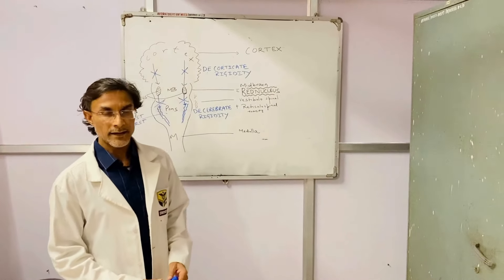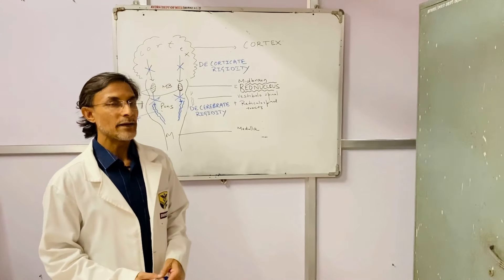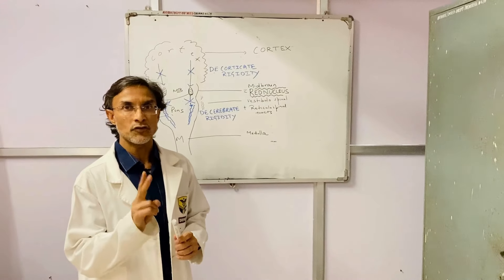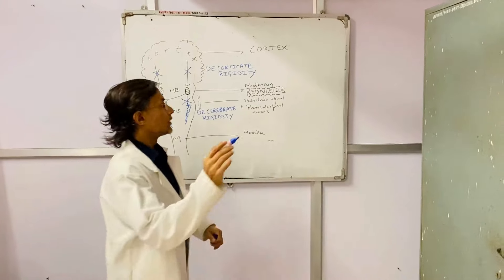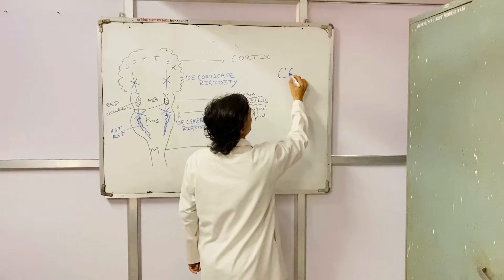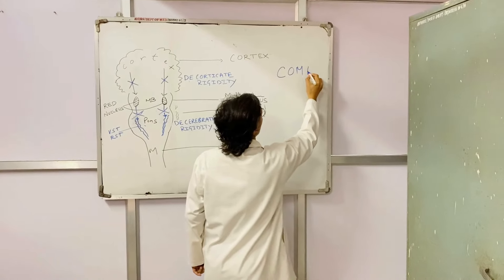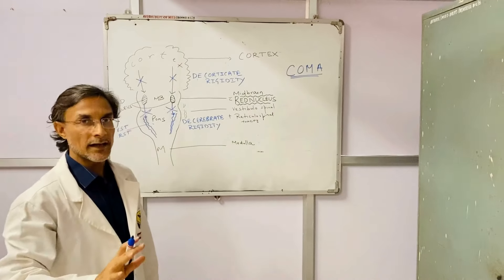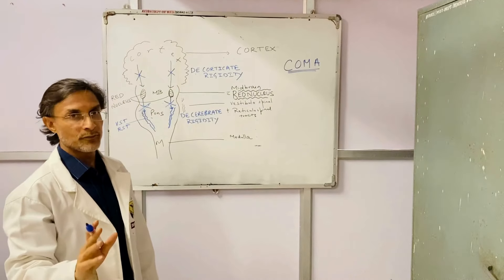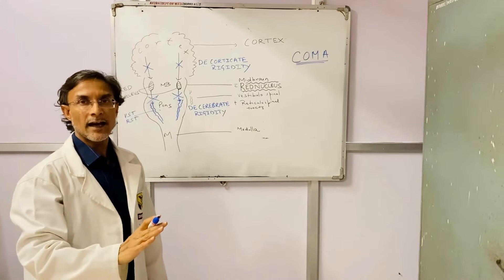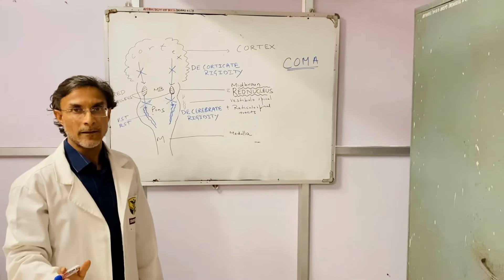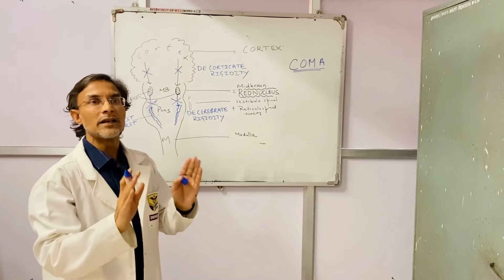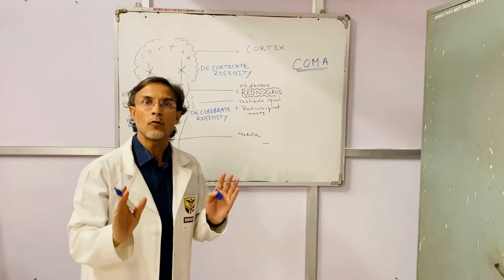Welcome to this clinical snippet. We will discuss the neuroanatomy of two classical posturing presentations in a comatose patient. We will study decorticate posturing and decerebrate posturing, and discuss the clinical implications and the site of lesion in a case of coma.